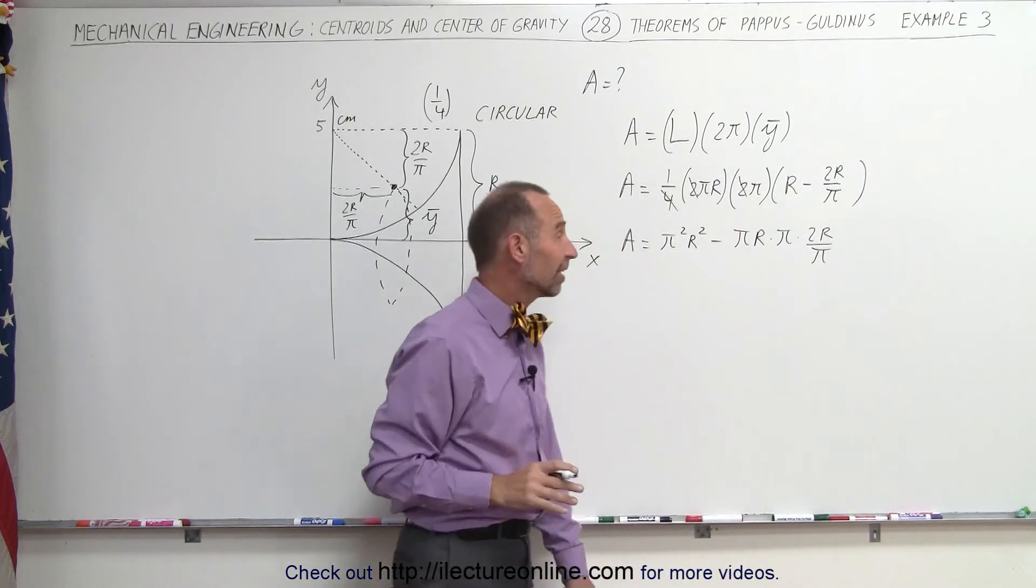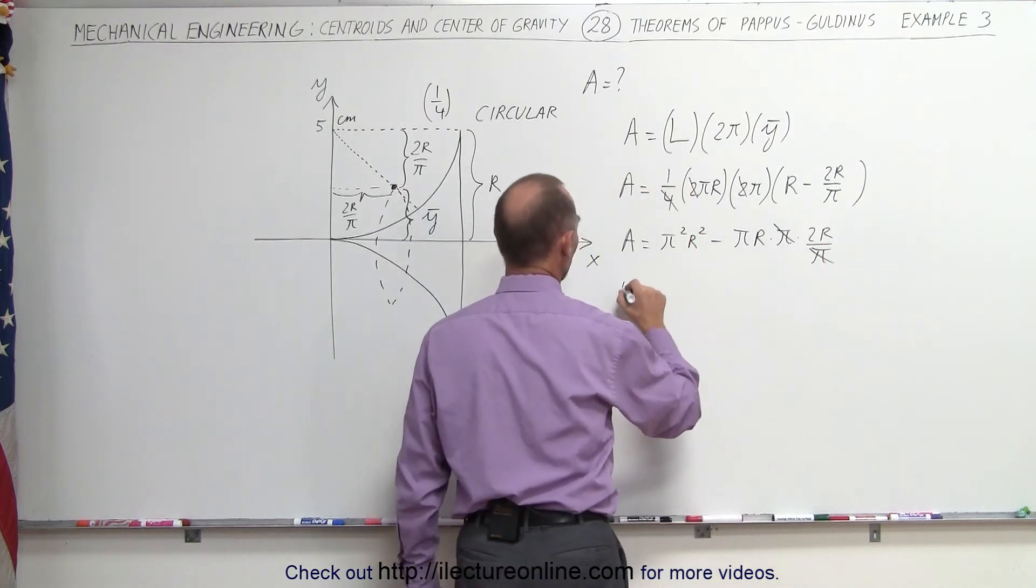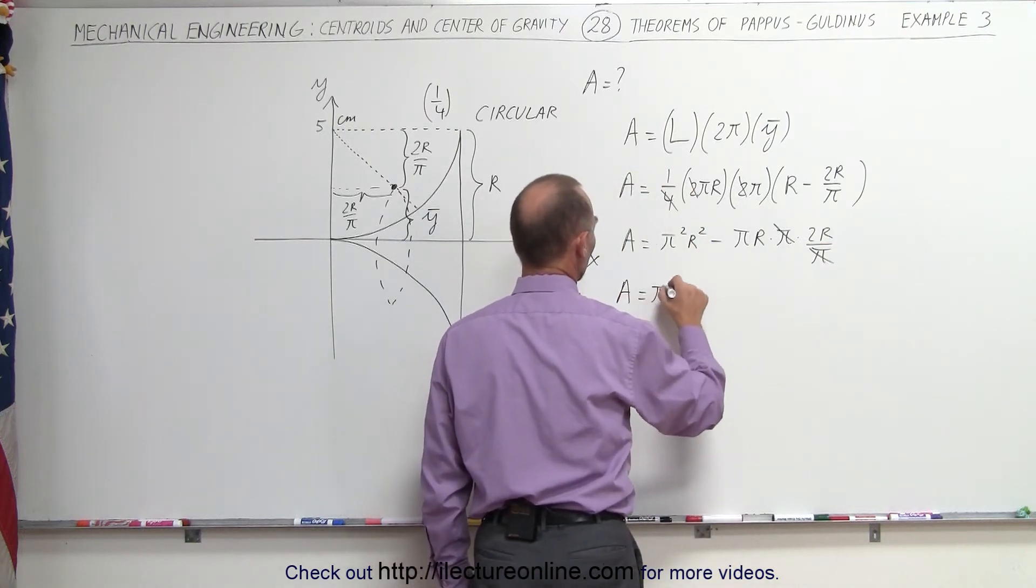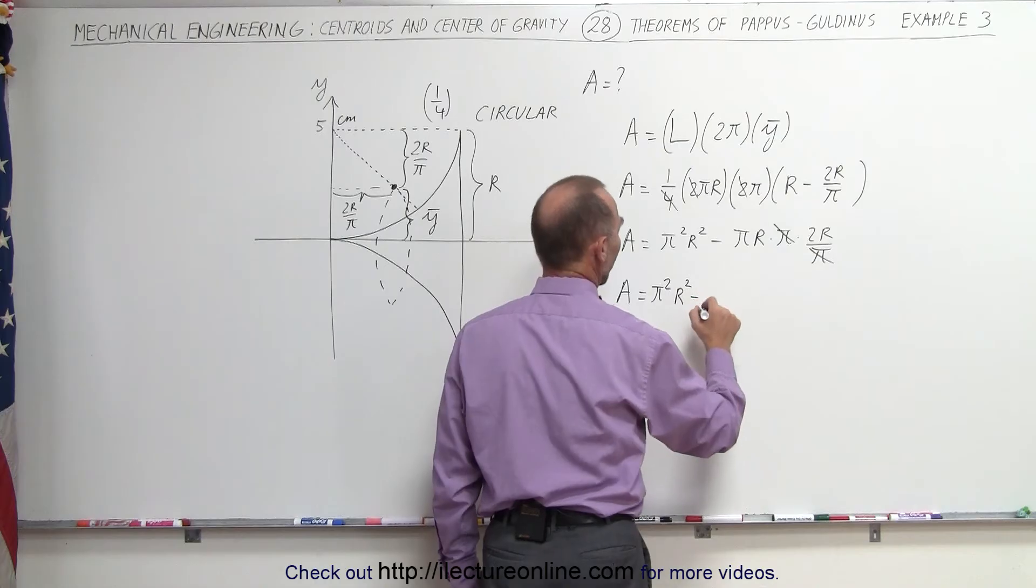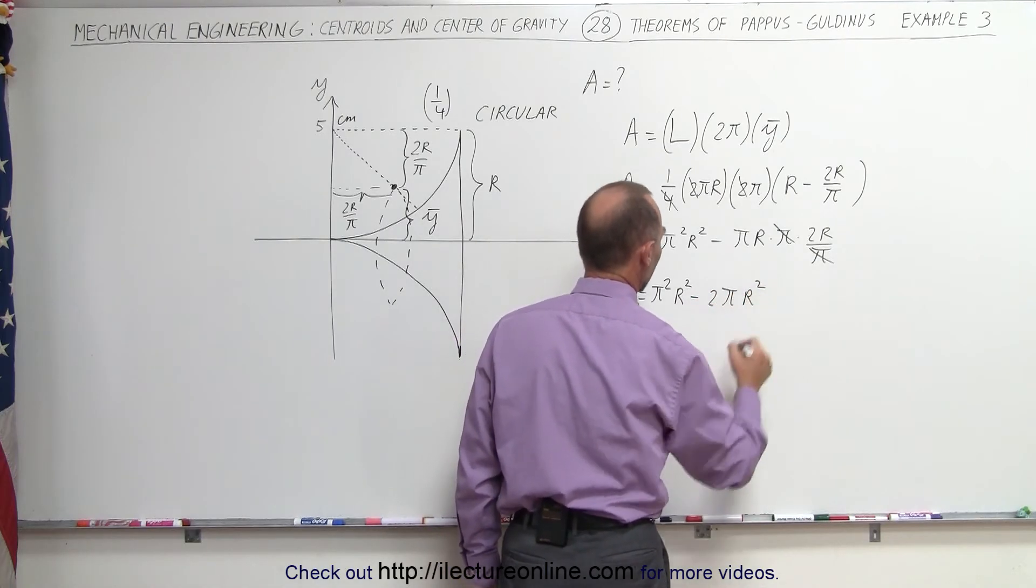So we get π times r times π times 2r divided by π. It's just better to write it out so we don't miss anything. Then one of these π's cancels out. And we end up with the area is equal to π²r² minus 2πr².